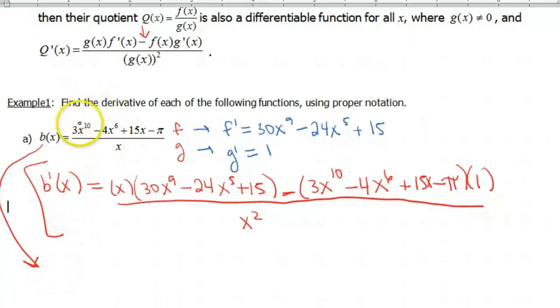Well, if you remember again, back to your algebra days, we can take each piece in our numerator, and since we only have one piece in our denominator, we can divide each piece out. So b(x) could actually look like, okay, so again, I'm going back to the original function. We're not gonna look at those derivatives anymore. 3x^10 over x, minus 4x^6 over x, plus 15x over x, minus π over x.